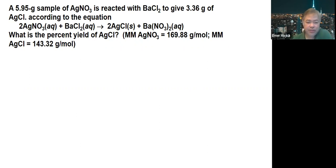Okay, so according to the equation, 2 silver nitrate plus 1 barium chloride, producing 2 silver chloride plus barium nitrate.